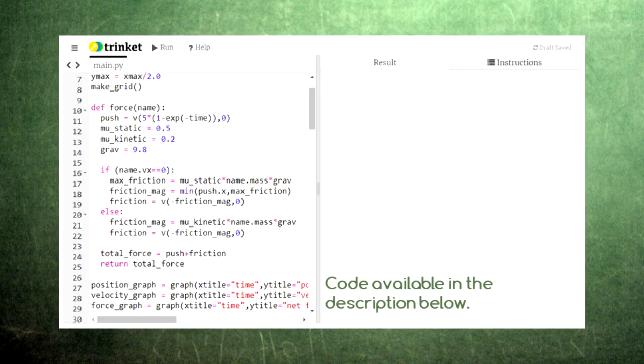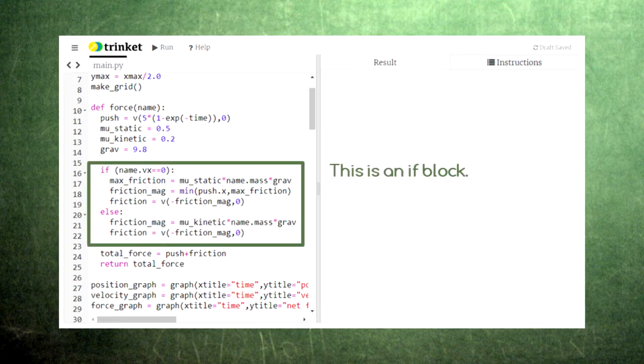To model friction in our code, we need to be able to tell the computer to behave differently based on whether the crate is moving or stationary. We can accomplish this goal by using an IF block.